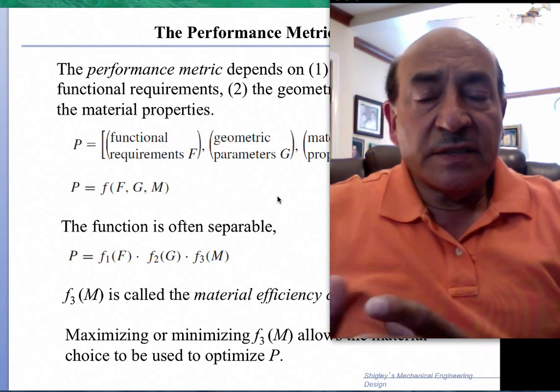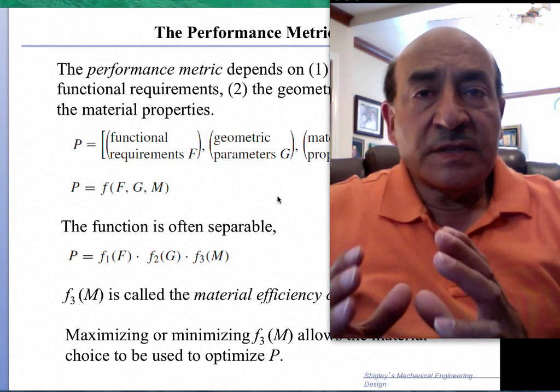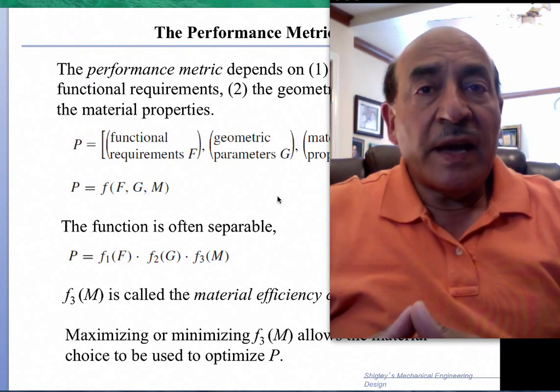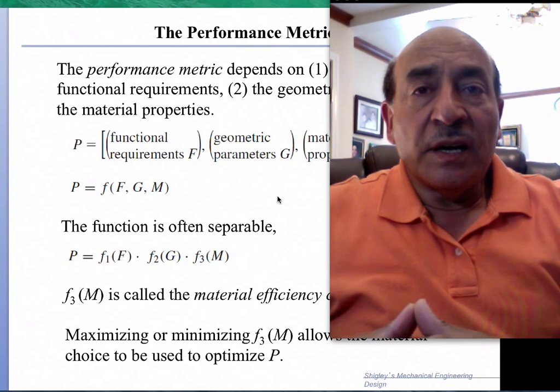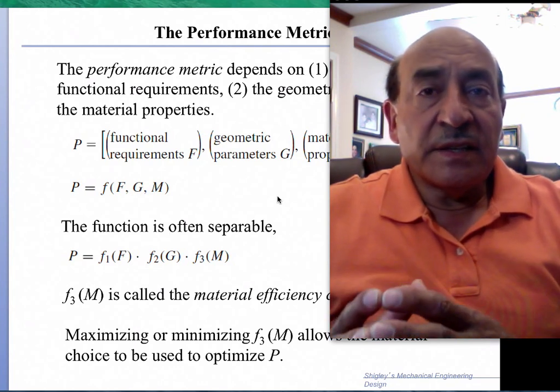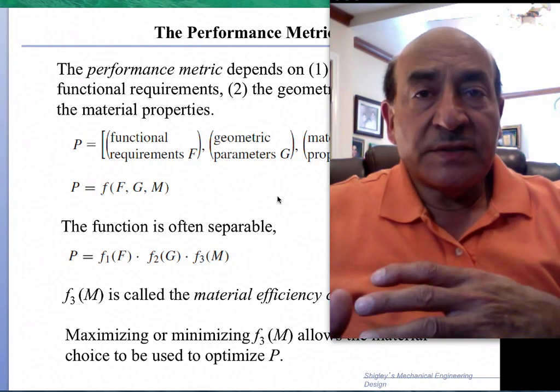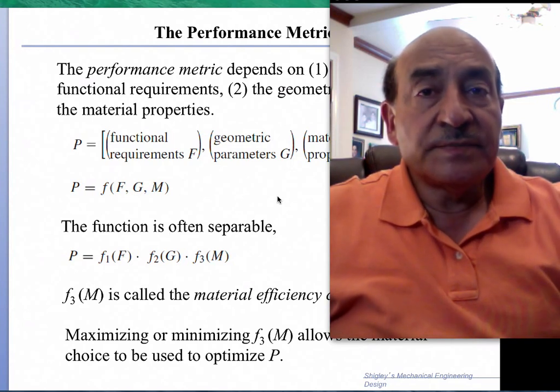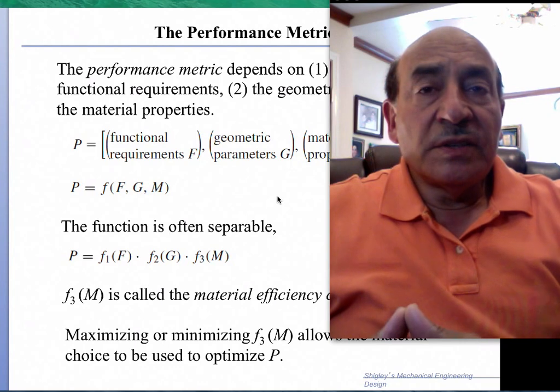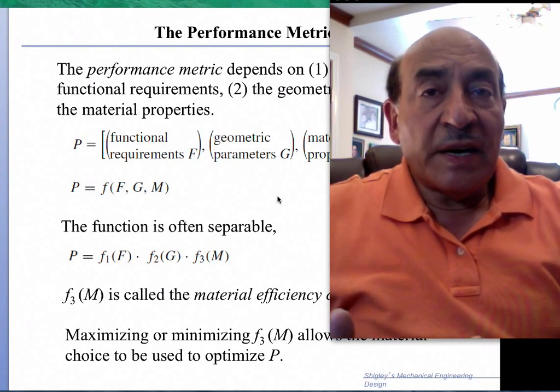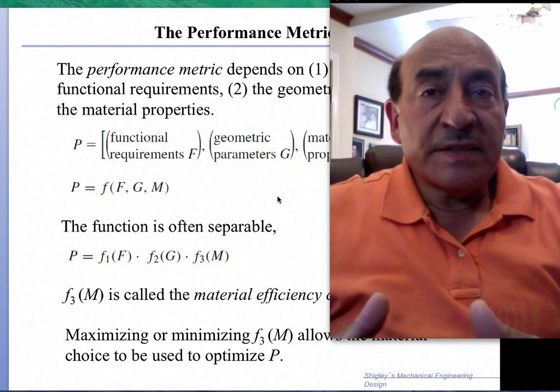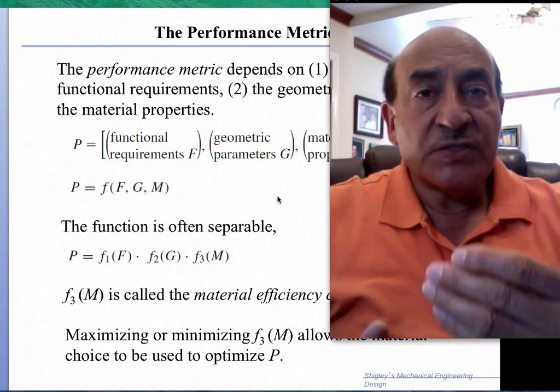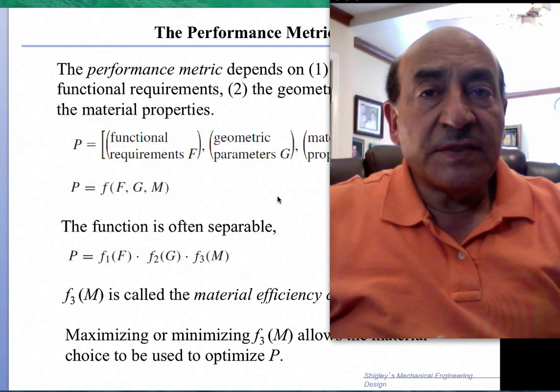We discussed during the last segment the selection criteria on the basis of stiffness, and it turned out that the key material combination of parameters that can maximize the stiffness but at the same time minimize the weight is the ratio of the density divided by the elastic modulus, and that is for the case of axial loading. We're going to call this combination of properties as a material performance metric.